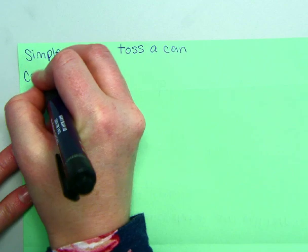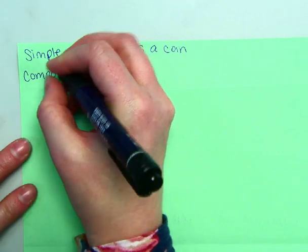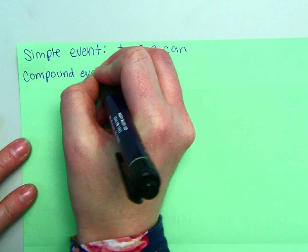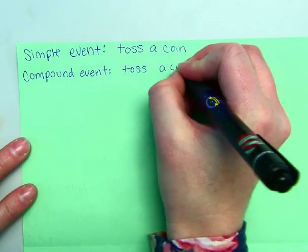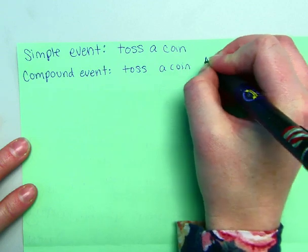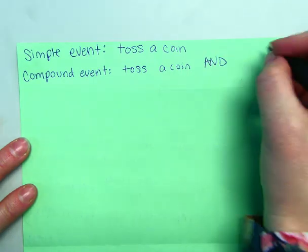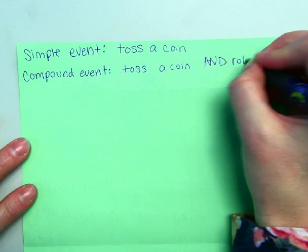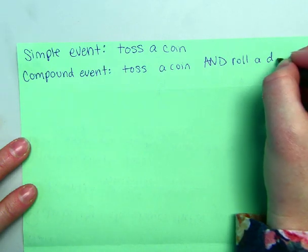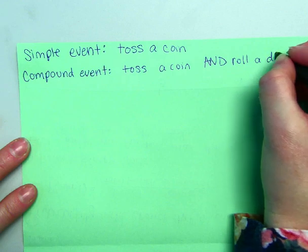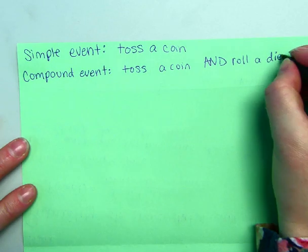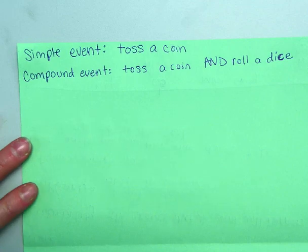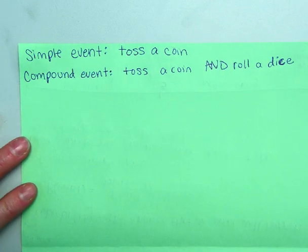Compound event. Compound event is where we have two things, two or more things happening. So an example would be toss a coin and roll a dice. Roll a die. So die is one. Roll a die. I think roll a die. It's dice. I always get confused on die or dice.